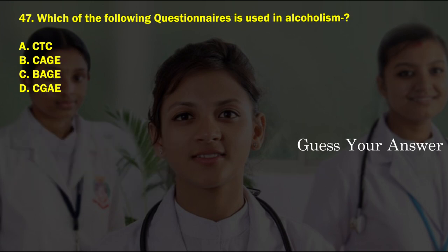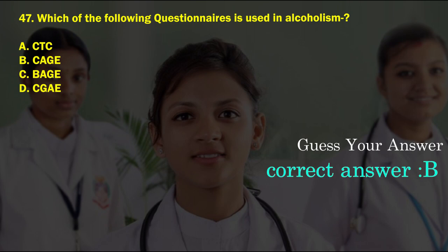Which of the following questionnaires is used in alcoholism? Option A: CTC, option B: CAGE, option C: BEIGE, option D: CGAE. The correct answer is option B, CAGE.